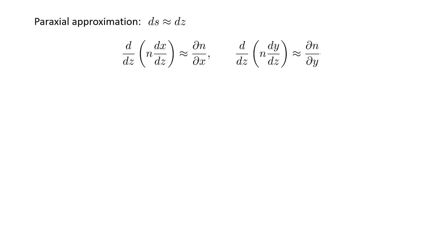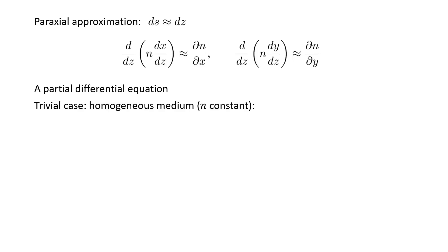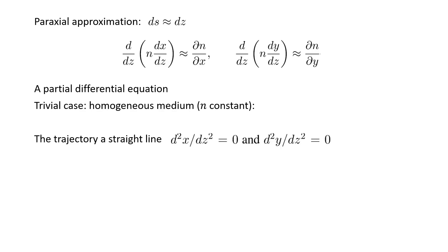With the paraxial approximation, the equations are simplified, with derivatives with respect to z instead of s. These are partial differential equations, while the previous ones were parametric equations. For the trivial case of a homogeneous medium for which n is constant, the derivatives on the right side of the two equations become zero, and since n is constant we can take it out of parentheses. In that case, the second derivatives of x and y with respect to z both become zero, which is simply the equation of a straight line.